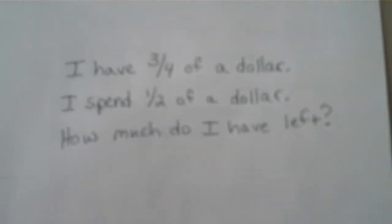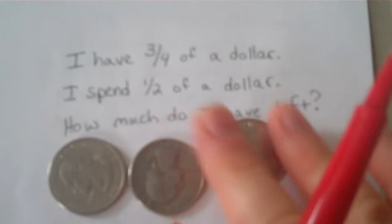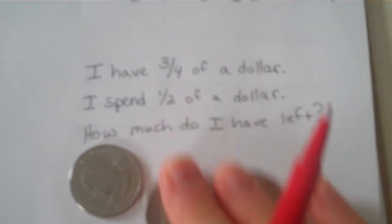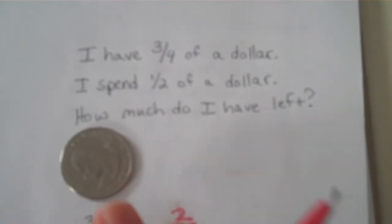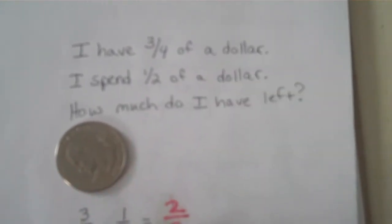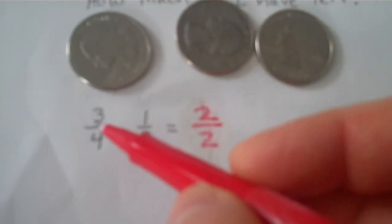Here's another one. I have three fourths of a dollar. I spend half a dollar. Now, how much do I have left? Obviously, I have one fourth of a dollar. But if we mess with the denominators, then here's what we get.